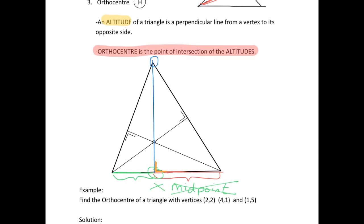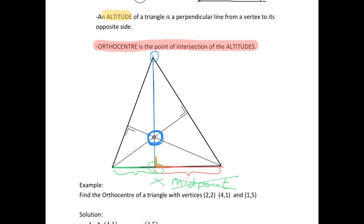And once again we're going to have to find a couple of these altitudes so that we can find their point of intersection to get us our orthocenter. So we'll take a look at an example of doing that now.